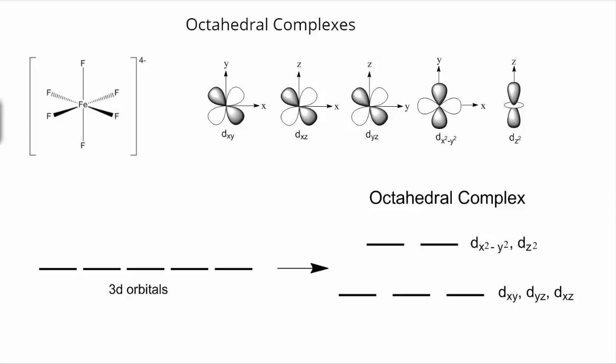Now we're going to transition into a discussion of crystal field theory. Crystal field theory explains why our 3d orbitals, which are typically degenerate, are no longer going to be degenerate. As a reminder, degenerate means all equal energy orbitals.